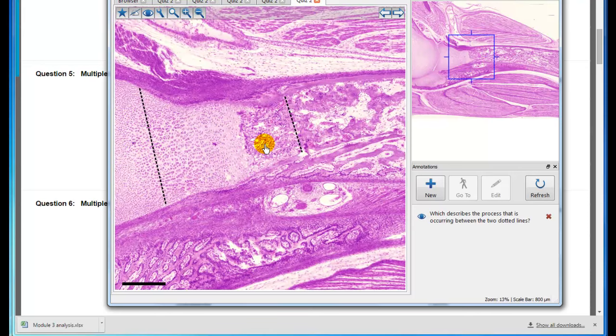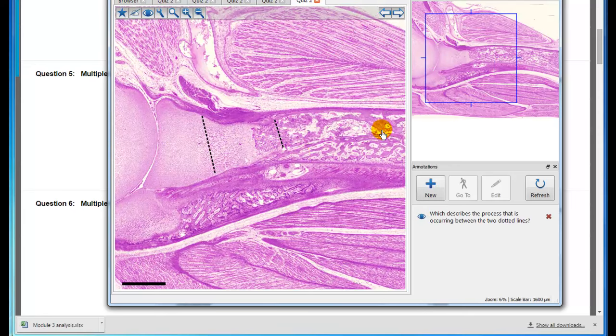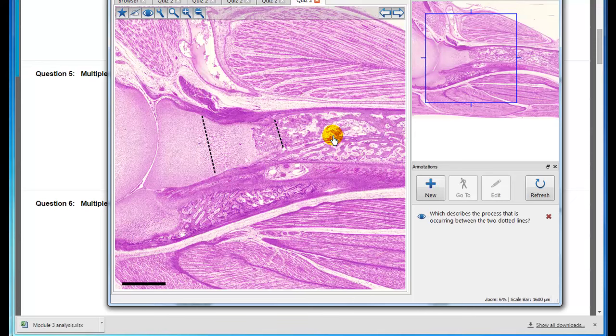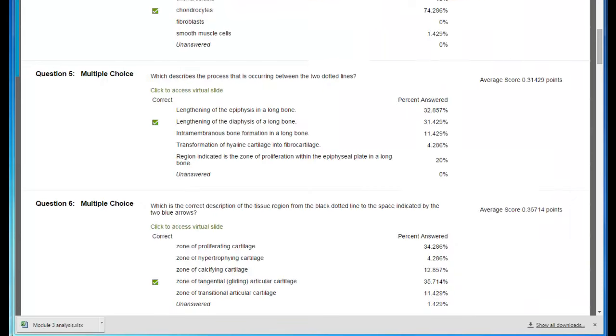Between the two dotted lines, this is the epiphysis here and this is the diaphysis. So what is lengthening is the diaphysis, not the epiphysis. And it is not intramembranous bone because of the cartilage present. And the transformation of hyaline cartilage into fibrocartilage is simply not true in this case.